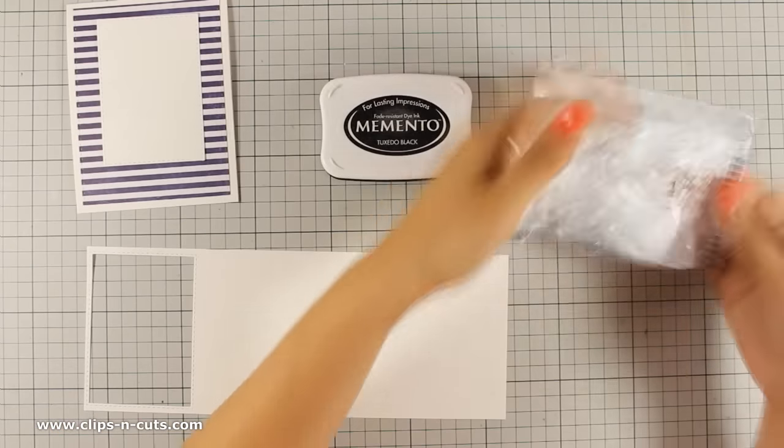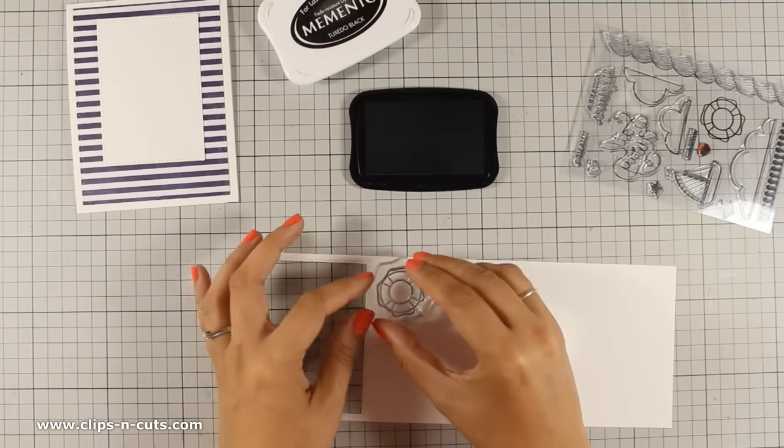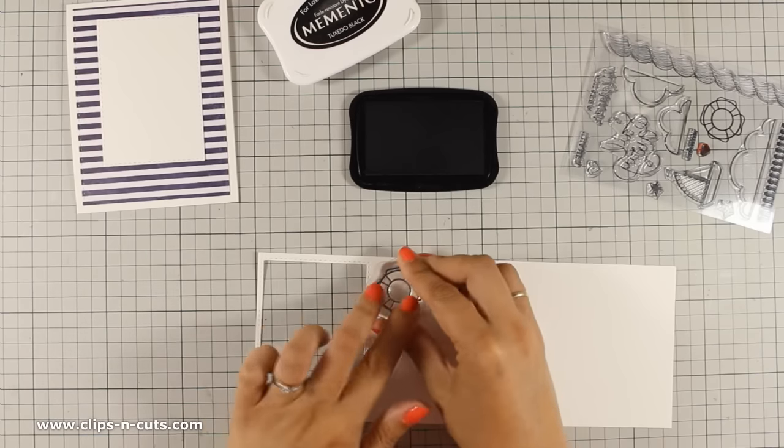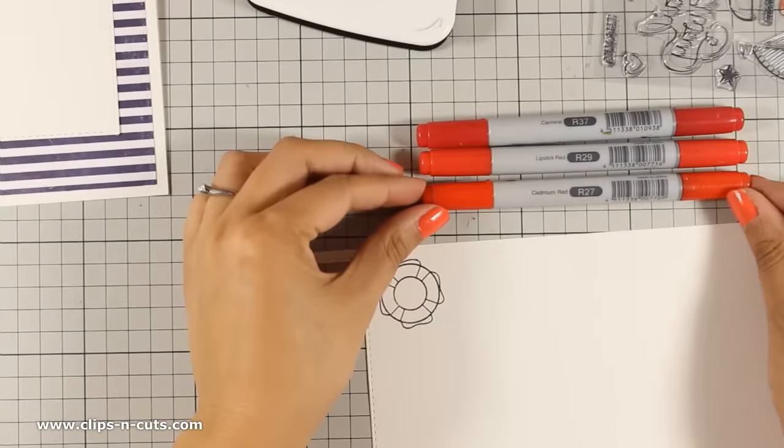As the focal point of my card I will be using this lifesaver and that's from the set that was included in the kit. So I am stamping it using Memento Tuxedo black ink and that's because I will be using my Copic markers to color the lifesaver.